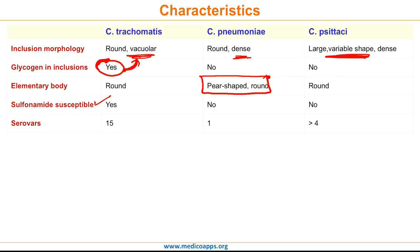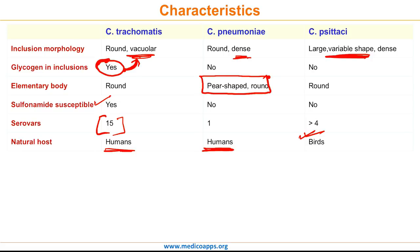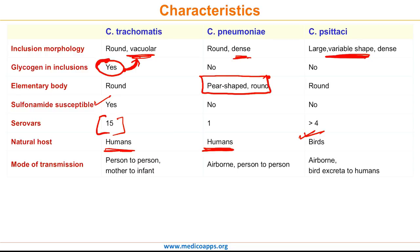The natural host for both C. trachomatis and C. pneumoniae is humans, but for C. psittaci it is birds. C. trachomatis has person-to-person transmission and is also transmitted from mother to infant during delivery. C. pneumoniae has both airborne and person-to-person transmission. C. psittaci is transmitted via airborne route through bird excreta to humans.